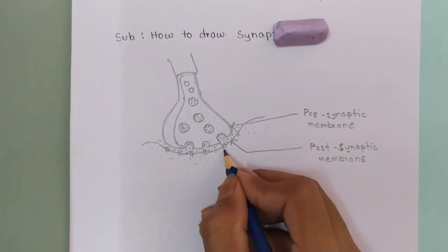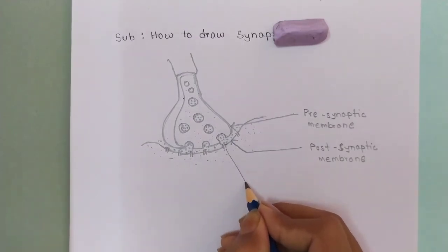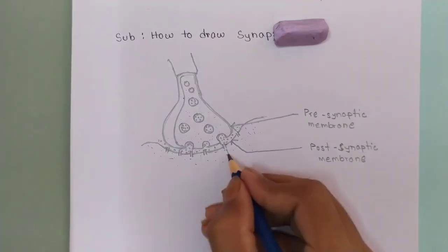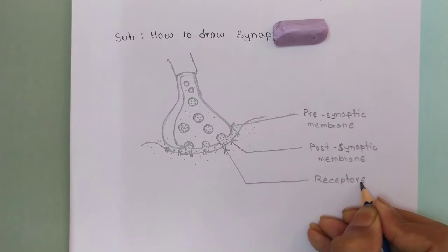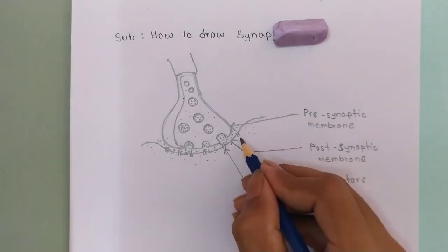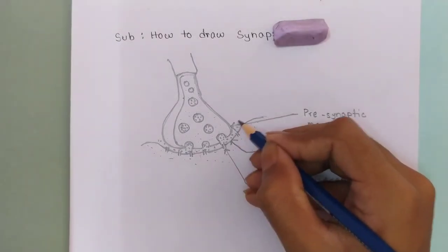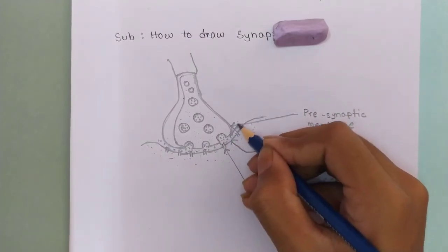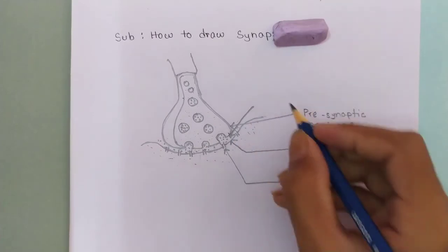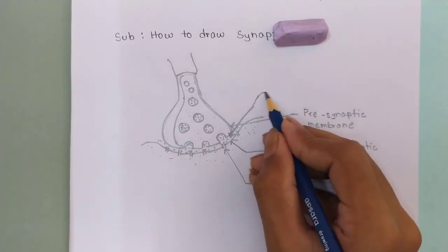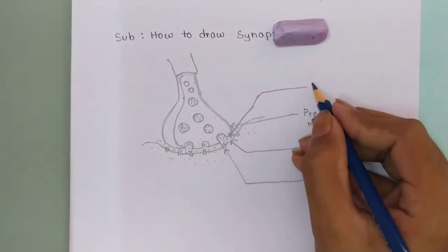These are the receptors and guys this part, this is the synaptic cleft.